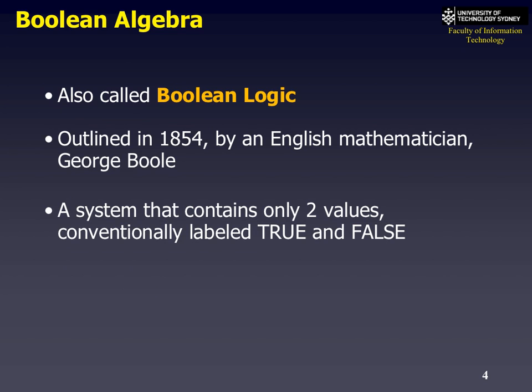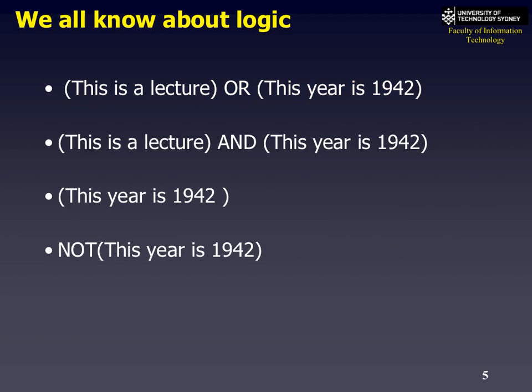We call this system Boolean logic simply because it was developed by a man called George Boole in 1854. We do intuitively understand logic anyway — here are some examples.